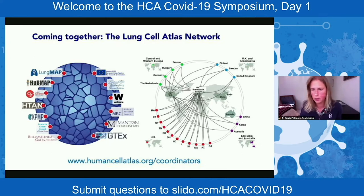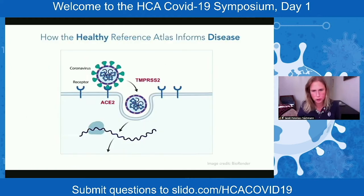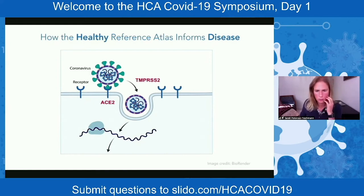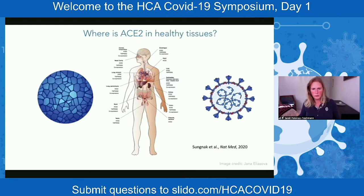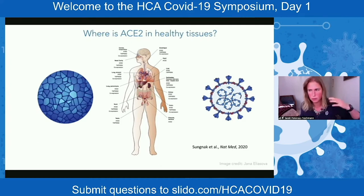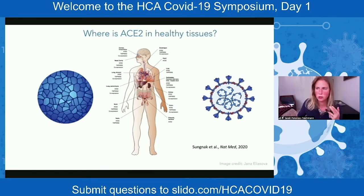This is a growing effort, and we invite everyone to join the HCA community at humancellatlas.org/joinHCA, or to write to coordinators if you're interested in specific tissues. What I want to focus on today is how that healthy reference data can help us inform our understanding of COVID-19. As already shown earlier in this session, the mechanism for the virus to enter cells is primarily through the ACE2 angiotensin-converting enzyme on the cell surface, and then proteases like TMPRSS2 and others downstream that cleave the virus.